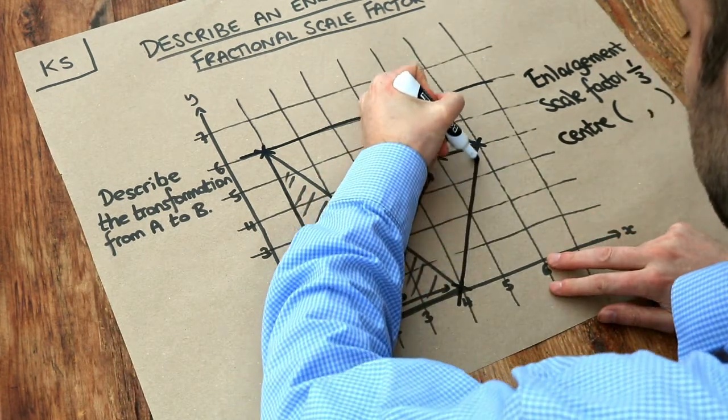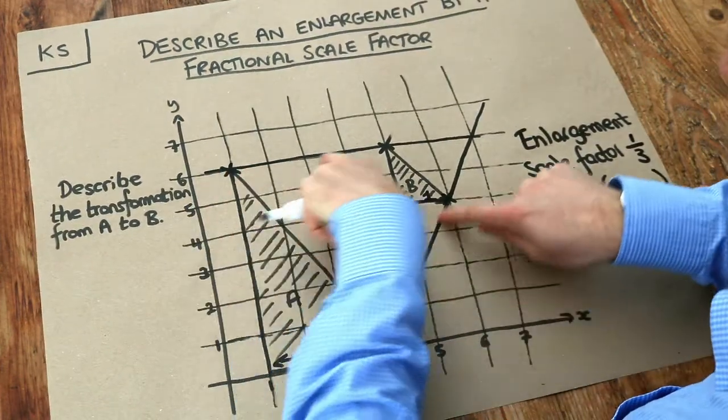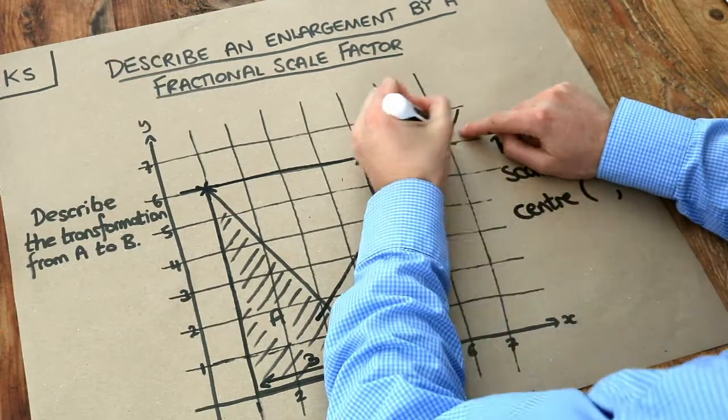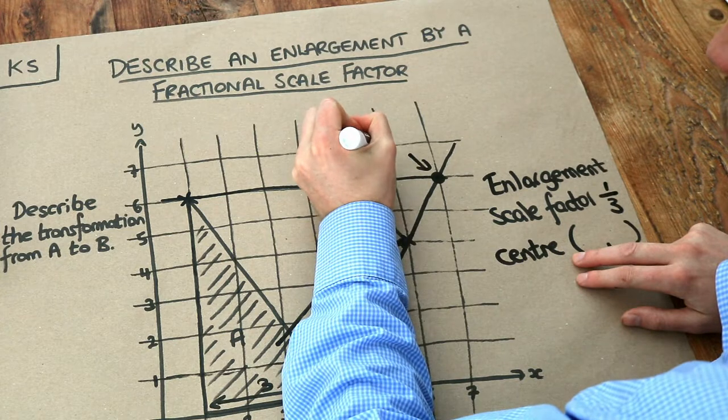Now usually you should be using a ruler, but I do not have a ruler that's big. And if we see where those two lines join up, we can see it's this point here. So that is your centre of enlargement.